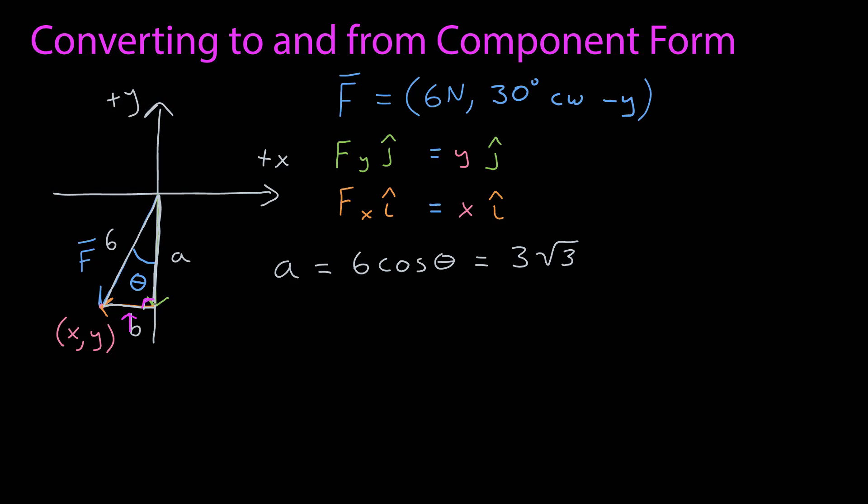I know basic trigonometry, cosine theta is adjacent over the hypotenuse, so the length of a for this triangle is 6 cosine theta, which is 3 times the square root of 3.